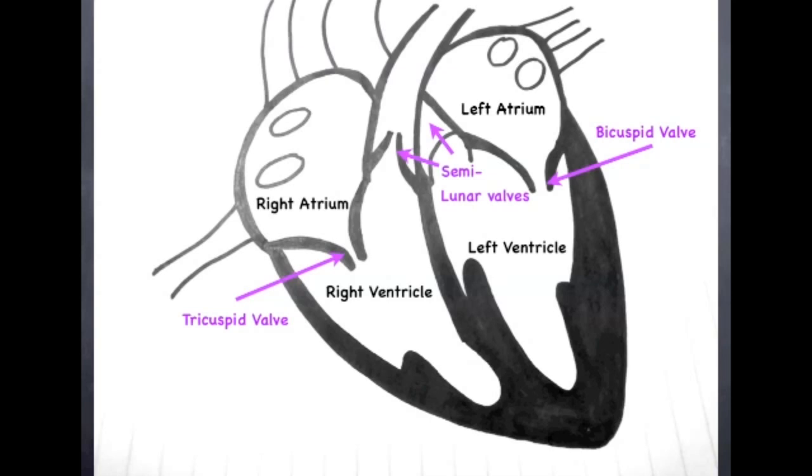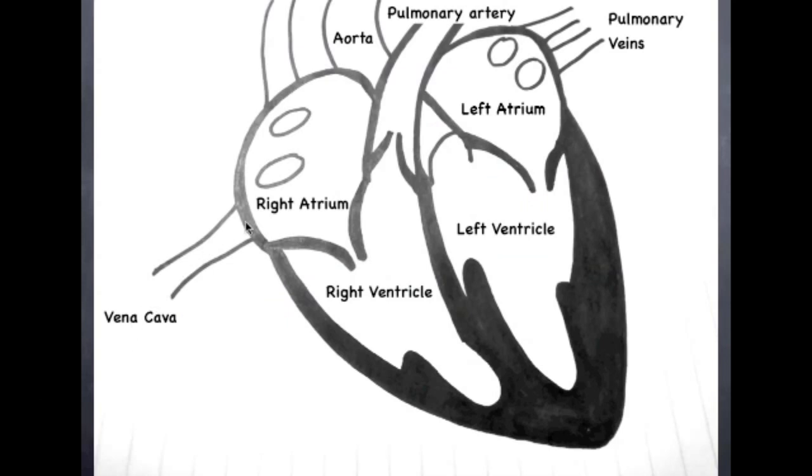When blood flows through the heart, it first enters via the vena cava, which is a vein. It goes into the right atrium, passes through the tricuspid valve into the right ventricle, and then out through the pulmonary artery to the lungs.